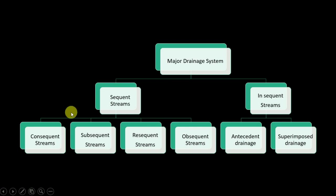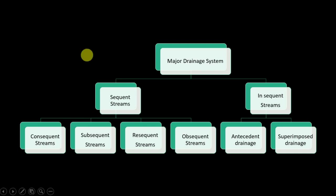Before going into these divisions, what is a sequent stream? Sequent streams are those which follow a particular regional slope. When we talk about these streams, they all follow the regional slope or the original slope that the geological structure has.